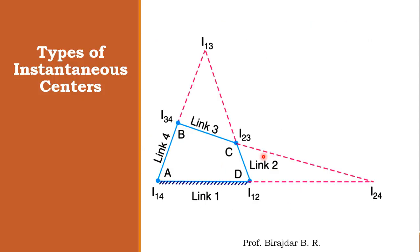Now we will see the different types of instantaneous centers. Here is a four-bar mechanism with link one, link two, link three, and link four. Different instantaneous centers are formed: instantaneous center I₁₂ is formed by link one and link two at the pin joint; I₂₃ is formed by link two and link three; I₃₄ by link three and link four; I₁₄ by link one and link four. Note that the naming is always in increasing order. Additionally, there are instantaneous centers I₁₃ and I₂₄.